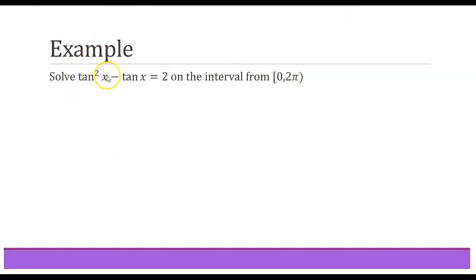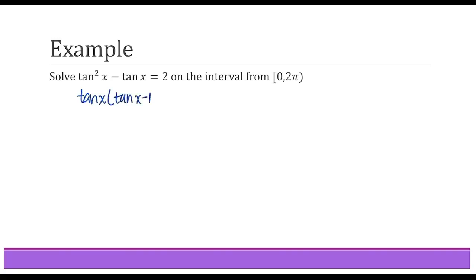In this example, solve tangent squared x minus tangent x equals 2 on the interval from 0 to 2 pi. Here I have the same trig function, but these two terms cannot be combined together. Another warning: since students see a tangent in each term, they attempt to factor out tangent x and get tangent x times (tangent x minus 1) equals 2 — but this is wrong. The problem is the 2: I cannot set factors equal to anything other than 0. That's the zero product property. So instead, subtract the 2 to the other side and set it equal to 0.